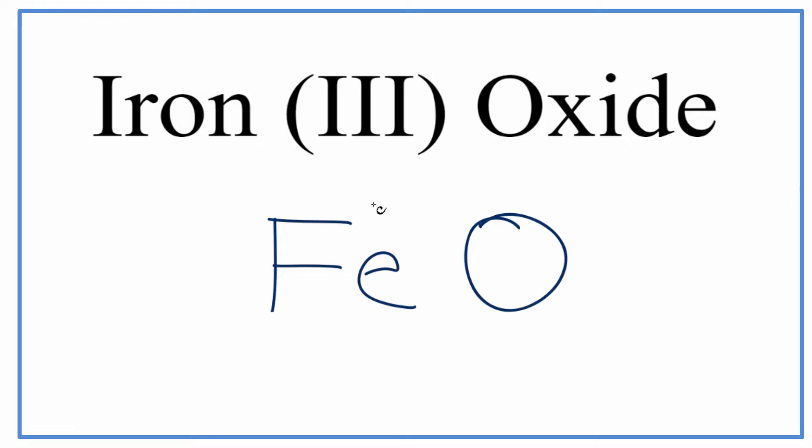We know that we have an ionic compound because we have a metal and a non-metal. So if it's ionic, we're going to have to deal with charges.